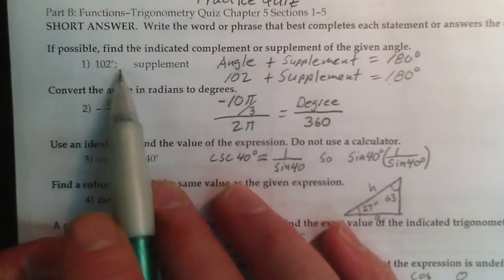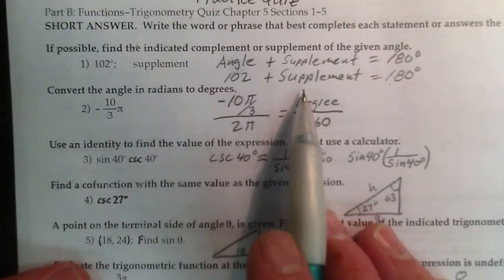So 102 plus some supplement angle equals 180, 78 degrees. No big deal.